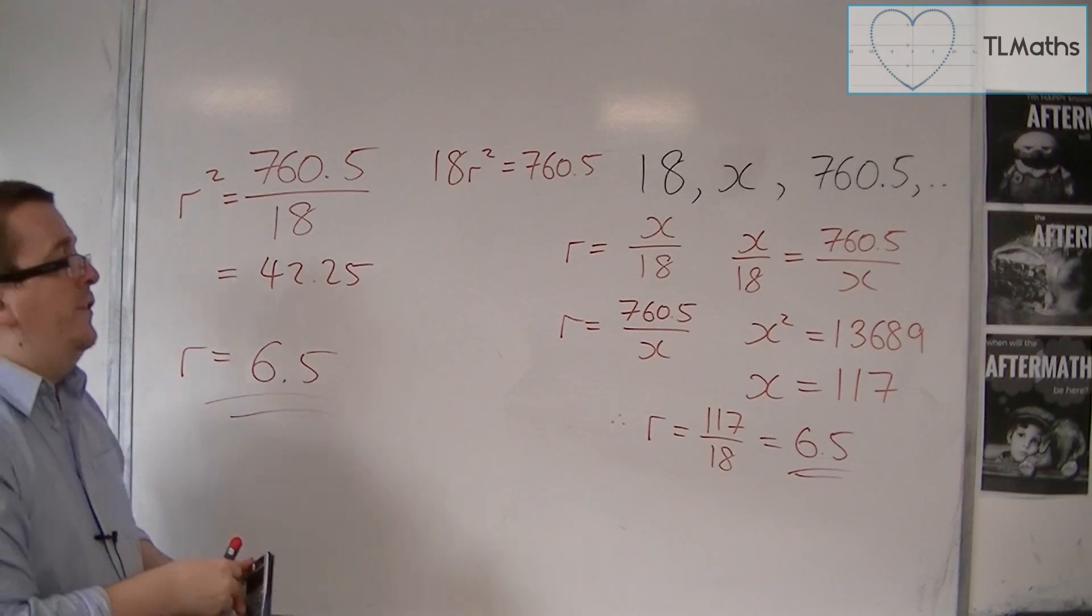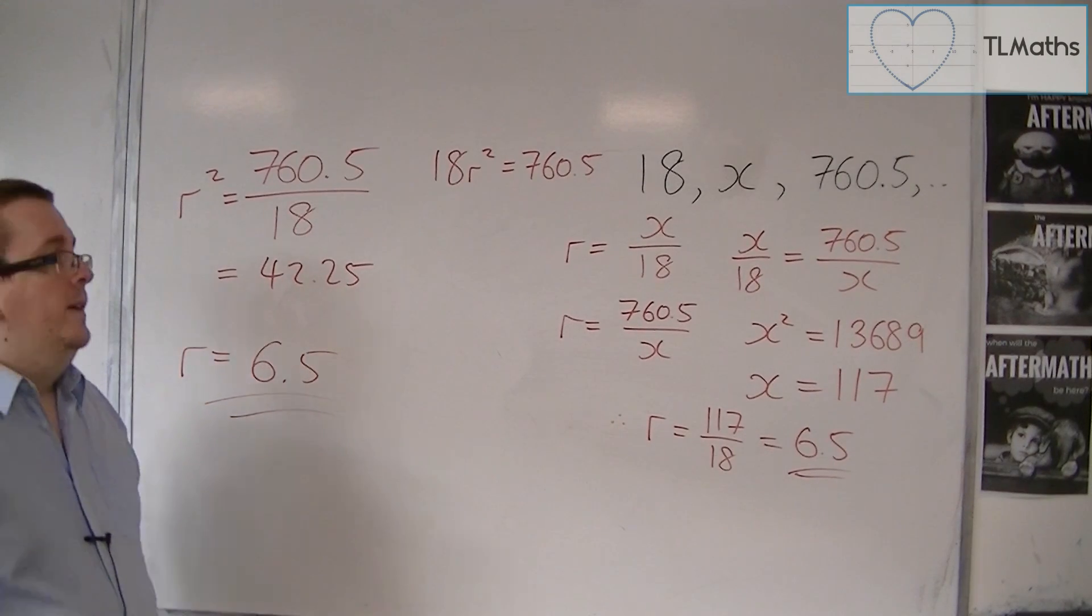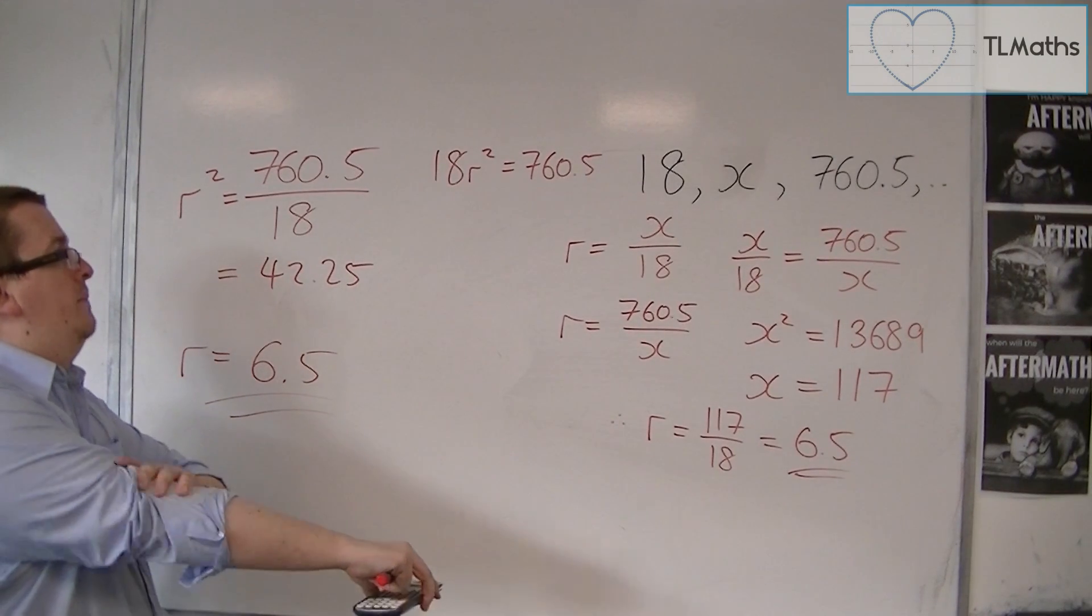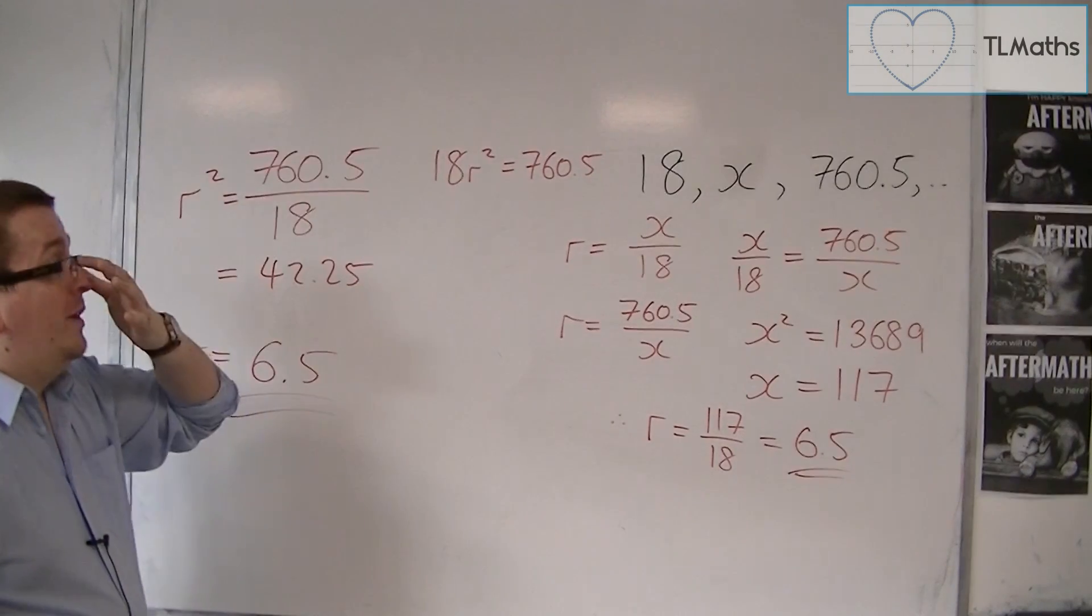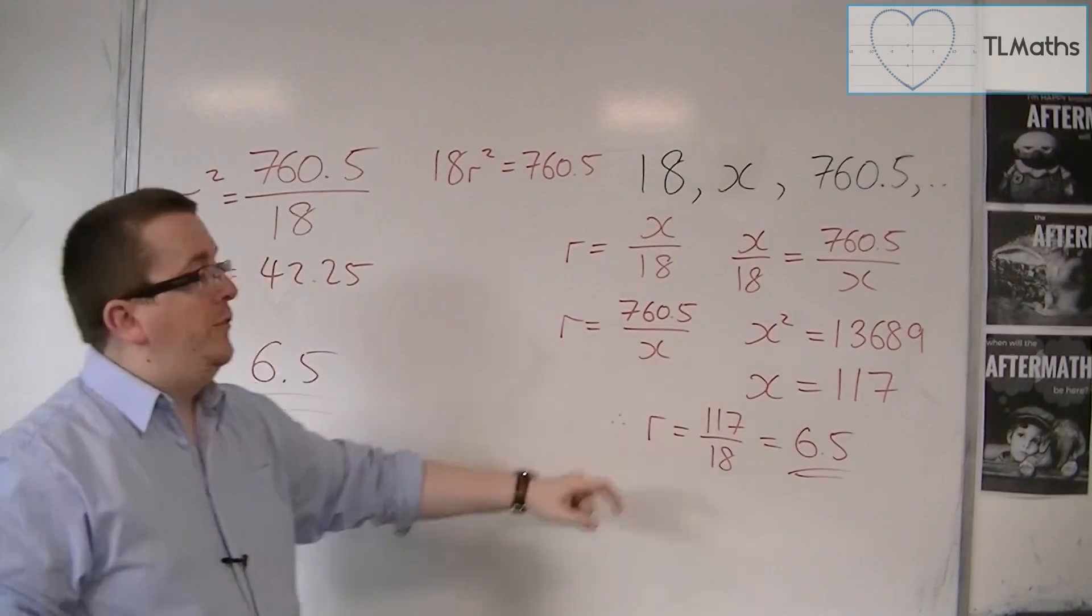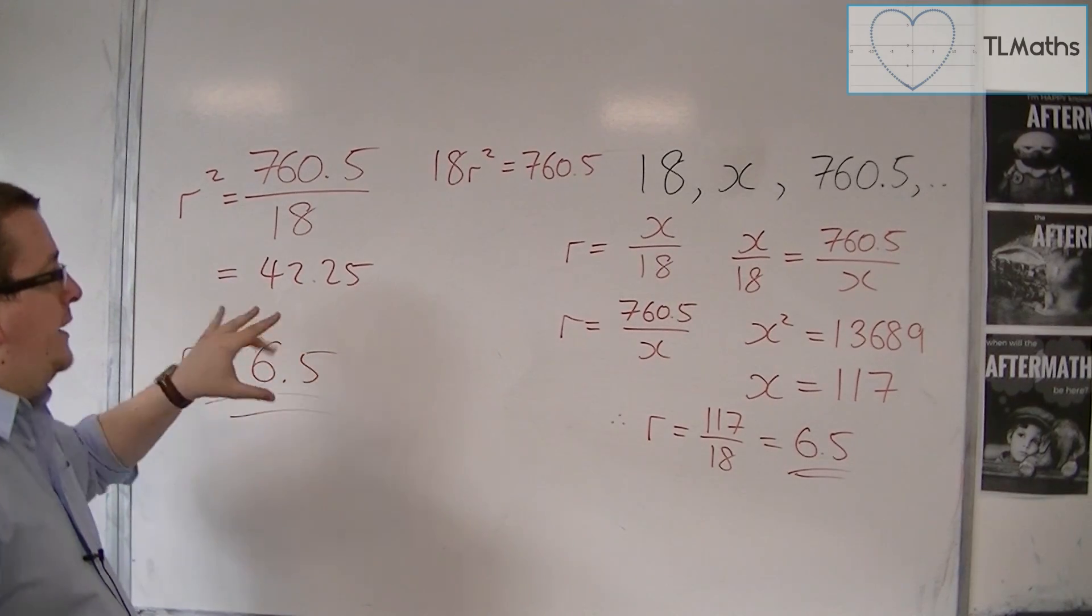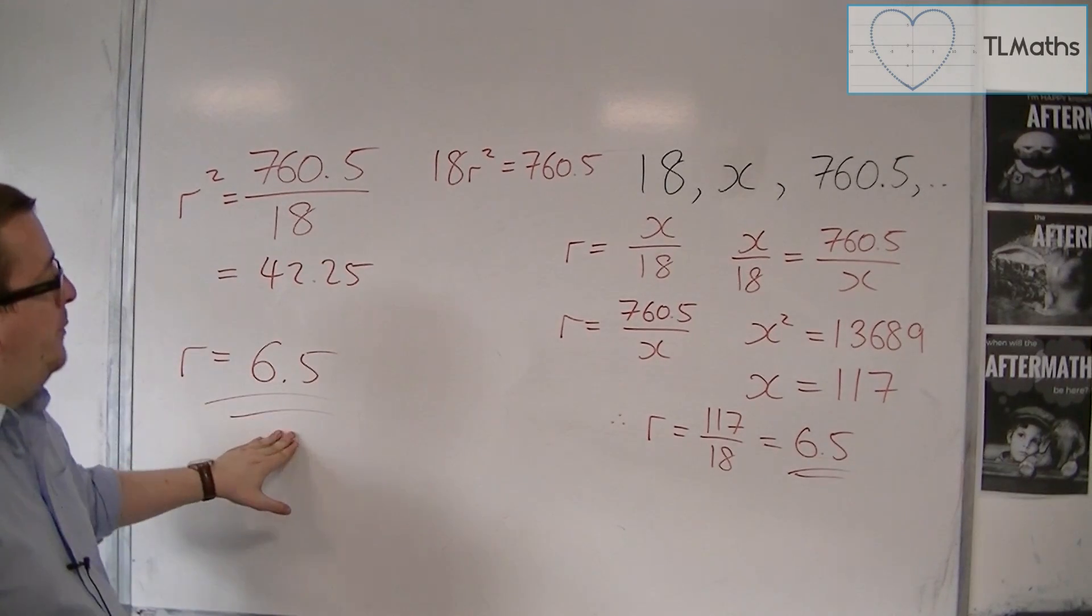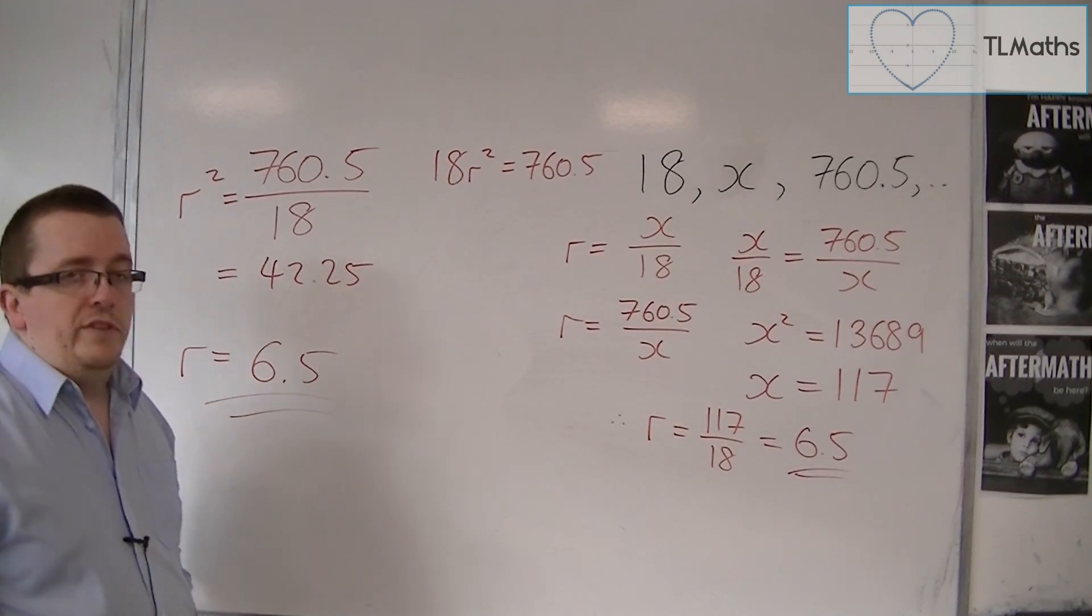So there are two methods there that you can employ that will work. It really depends on what the question is looking for at the end of the day. Because this one was good for working out the value of x first. This finds you r. But obviously you could work out what x is by doing 18 times 6.5 to get the 117 that way.